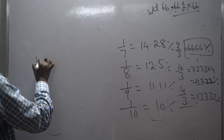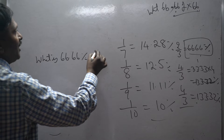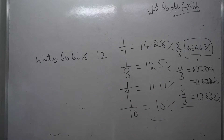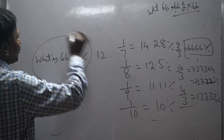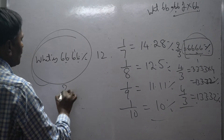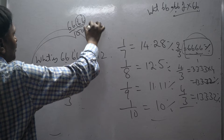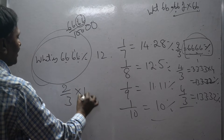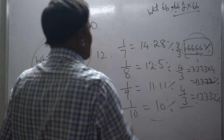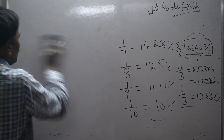For example: what is 66.66 percentage of 12? If you know the reciprocal value — 66.66 percentage equals 2 by 3 — you simply calculate 2 by 3 into 12, which gives 8. No need to do 66.66 divided by 100 with complex decimals. So remembering percentage reciprocals helps you find answers quickly.